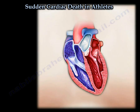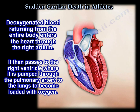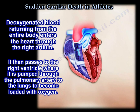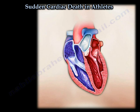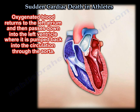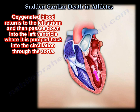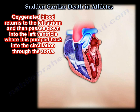Deoxygenated blood returning from the entire body enters the heart through the right atrium. It then passes to the right ventricle where it is pumped through the pulmonary artery to the lungs to become loaded with oxygen. Oxygenated blood returns to the left atrium and then passes down into the left ventricle where it is pumped back into the circulation through the aorta.